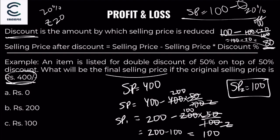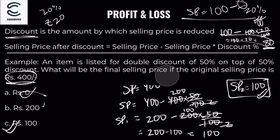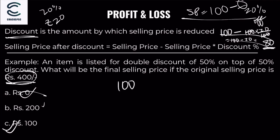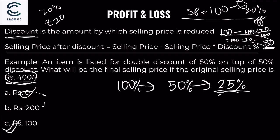So the answer is 100, not 0. The original selling price was 400 and after both discounts it came to 100. A 50% plus 50% successive discount gives a 75% total discount, meaning the selling price becomes 25% of the original.